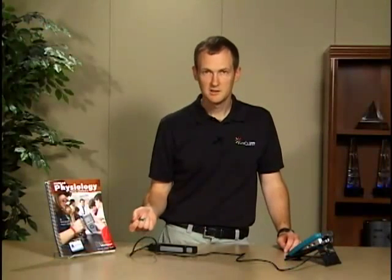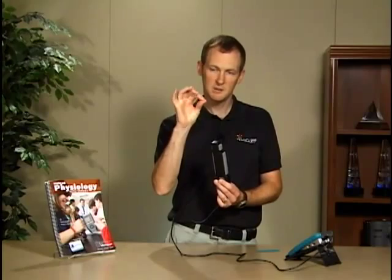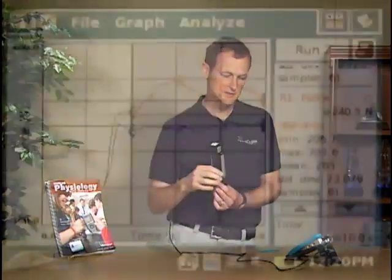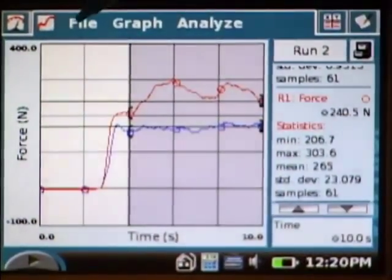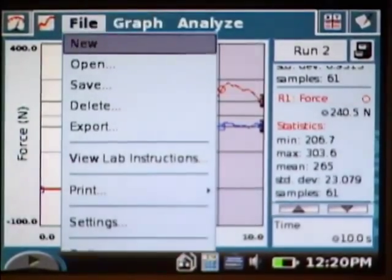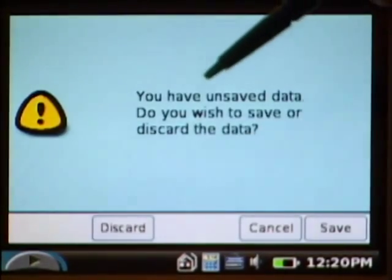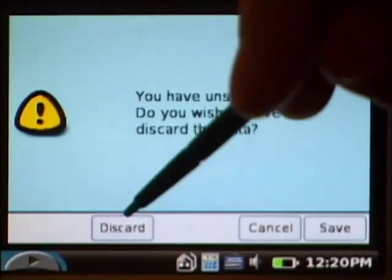For the second part of this activity, instead of comparing one hand to another, we're going to compare pincer grip strength. On the same hand, we'll compare how hard I can pinch between thumb and different fingers. What we're going to do is go into the file menu and select new. I'll be asked if I want to save the data. Typically, you'd have the students write down the values, but in this case, we're just going to discard it.